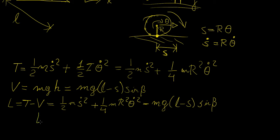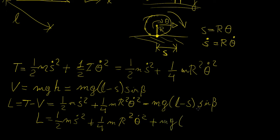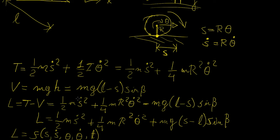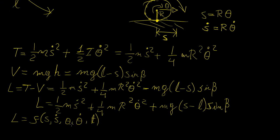We can simplify by distributing the negative sign, rewriting as one-half m s-dot squared plus one-quarter m r squared theta-dot squared plus mg(s minus l) sine beta. The Lagrangian is a function of five variables: s, s-dot, theta, theta-dot, and time. Crucially, we notice there is no explicit dependency on theta itself, so theta drops out and the Lagrangian simplifies.